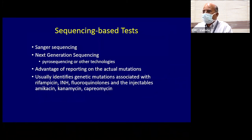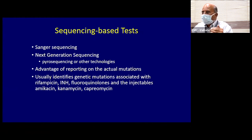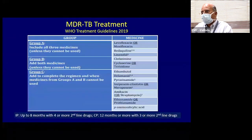Sequencing-based technologies — either Sanger sequencing or next-generation sequencing using pyrosequencing or other technologies — can detect various mutations on the genome for rifampicin, INH, fluoroquinolones, and injectable agents. Like in HIV treatment, genotypic resistance mutations will increasingly dictate treatment choice upfront in many patients.